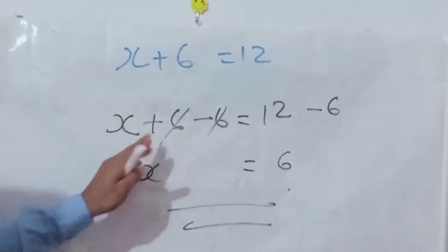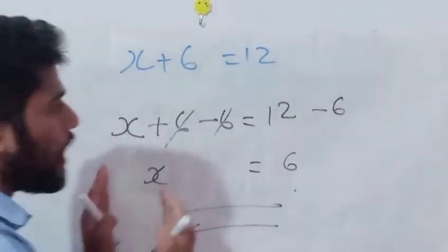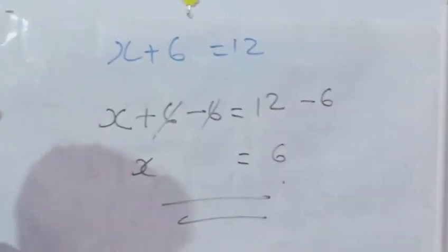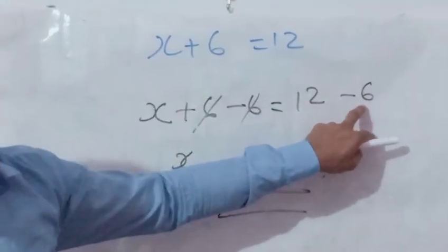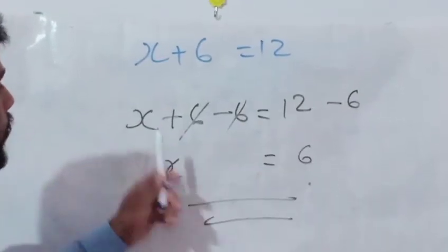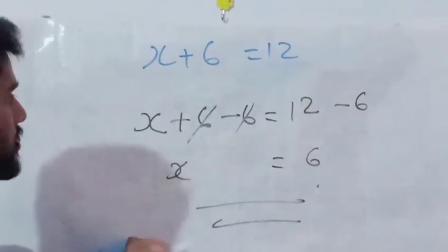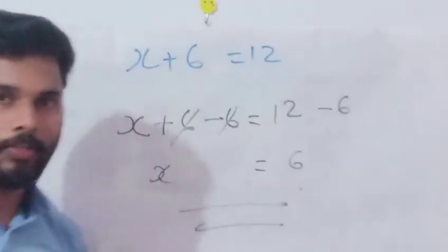On the left hand side, nearby X, plus 6 is there. So we are adding minus 6 with that. How much we add on the left hand side, the same value you have to add on the right hand side also. Here minus 6 we added, the same thing here also. So what happened? This plus 6 and minus 6 is cutting, then X = 6.